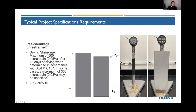Typical specification requirements are twofold. The first is the classic free shrinkage of unrestrained conditions—similar to some European methods—where a concrete prism is made and the change in length is measured over time to determine shrinkage under laboratory conditions. In the United States, a maximum shrinkage of 500 microstrain—0.05% change in length—after 28 days of drying is typical. In some specialized cases, such as reduced curing, high restraint, or repair applications, this may be reduced to about 300 microstrain.